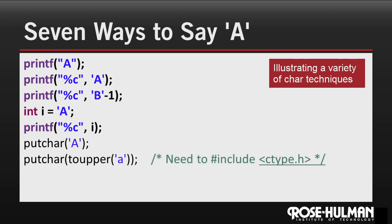This example is using a library function from the ctype library that we'll look at later. This takes a lowercase a character, calls the toUpper function to convert it to uppercase, and then uses putchar to display it.